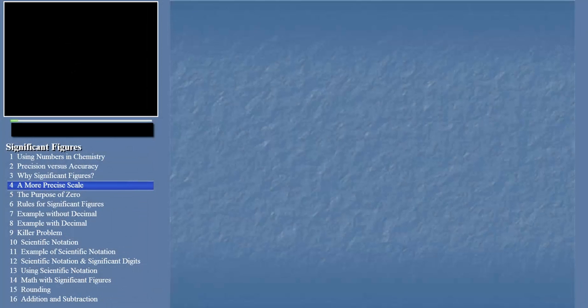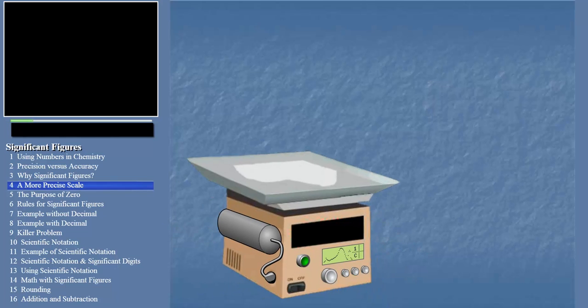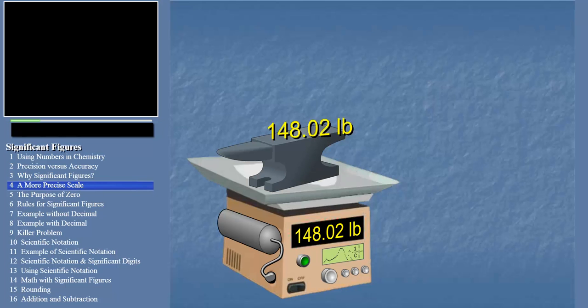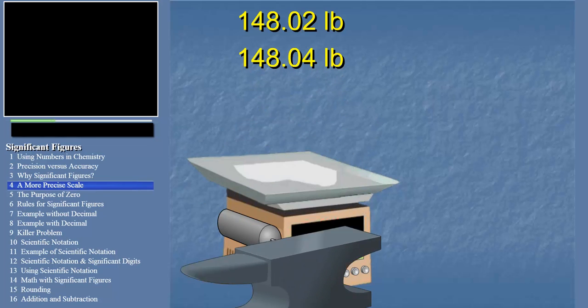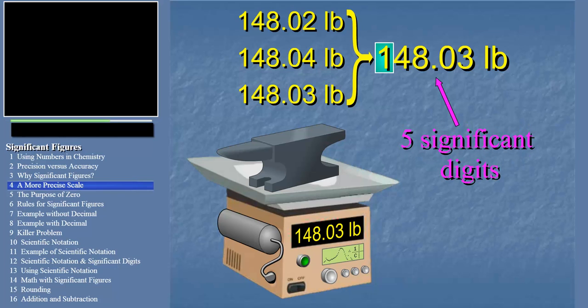Now let's take three more measurements on a fancy one million dollar super scale this time. Our first measurement on this scale is 148.02 pounds, the second is 148.04 pounds, and the third is 148.03 pounds. In this case, we are justified in reporting our average as 148.03 pounds. This is because the uncertainty of the number doesn't begin until the fifth digit, or the number 3. Therefore, this value has five significant digits, and the number is more precise than the one reported with the bathroom scale, meaning the measuring device is more precise.